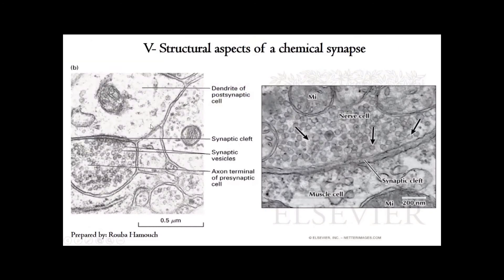Here we have two photos of a neuro-neuronal synapse and a neuromuscular synapse under the electron microscope. In the pre-synaptic neuron, the pre-synaptic vesicles contain neurotransmitters which are released into the synaptic cleft, where they bind to the post-synaptic membrane and allow or inhibit transmission of the message. In the neuromuscular image, we can see the post-synaptic muscle membrane, the pre-synaptic nerve cell filled with neurotransmitter vesicles, and the synaptic cleft.